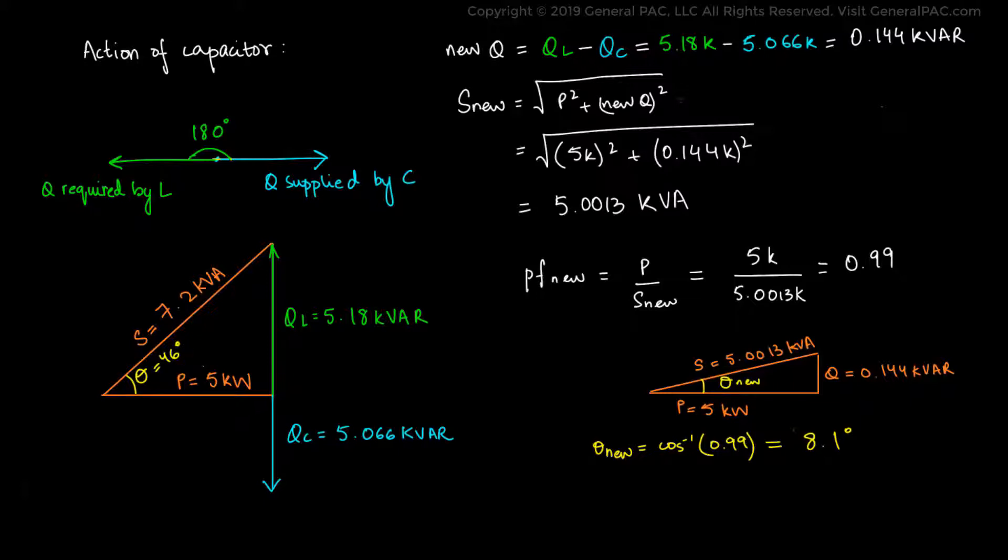Again, we calculated that by inverse cosine of 0.99. But what if we used a capacitor of 72 microfarads instead of 70 microfarads? If we redo the entire calculation for a 72 microfarad capacitor, then the resultant reactive power will come out to be more than the inductive load requires. So the extra reactive power supplied by the capacitor will result in a leading power factor for the system, where the current will start to lead the voltage by a known phase angle.